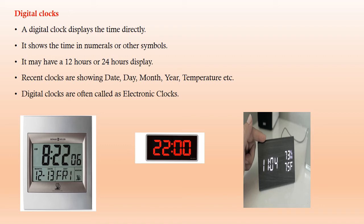Digital clocks: A digital clock displays the time directly. It shows the time in numerals or other symbols. It may have a 12-hour or 24-hour display. Recent clocks are showing date, day, month, year, temperature, etc. Digital clocks are often called electronic clocks.